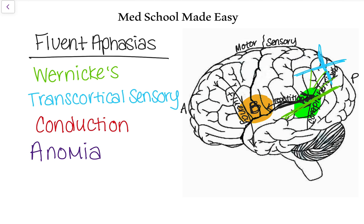Conduction aphasia is interesting and more rare. In conduction, the main signals between Broca's and Wernicke's cannot conduct — the fibers in between the two areas are disrupted. What's interesting is you can comprehend and you are fluent, so if you don't ask a patient to repeat, it could seem like they have totally normal speech. That's why repetition is so important to test, because the inability to repeat is the only deficit in conduction aphasia.